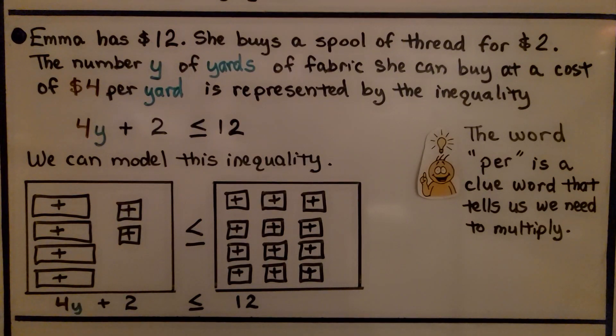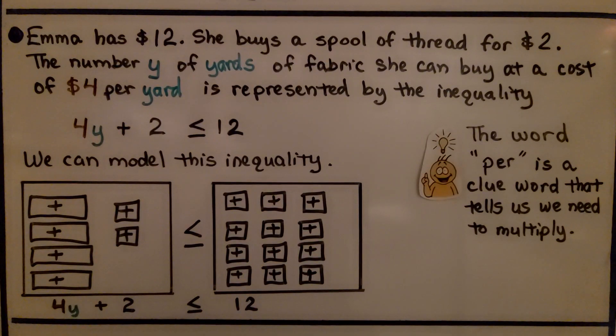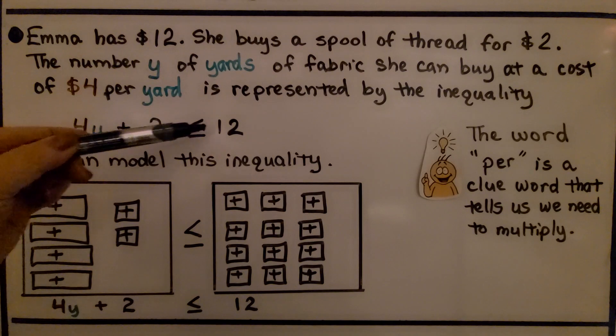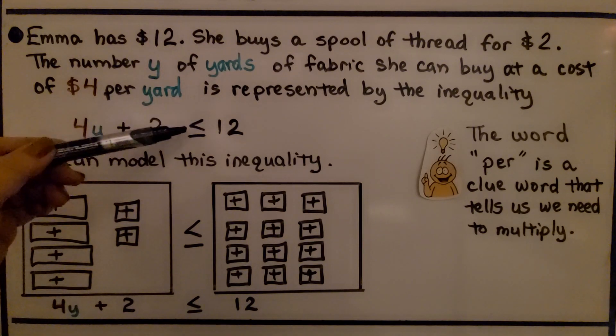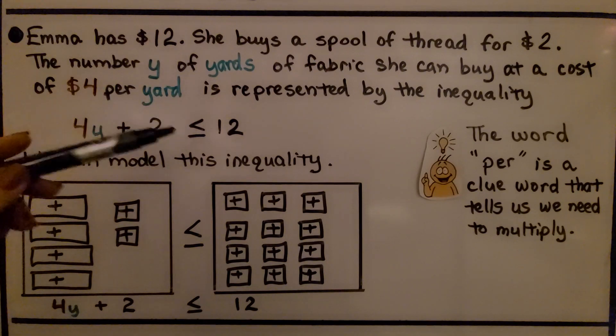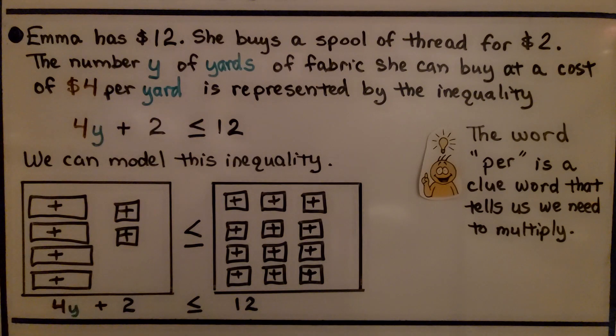Emma has $12. She buys a spool of thread for $2. The number y of yards of fabric she can buy at a cost of $4 per yard is represented by the inequality 4y plus 2 is less than or equal to 12. And it's less than or equal to because she can't go over 12. That's all she has. So she can spend an amount less than 12 or equal to 12.